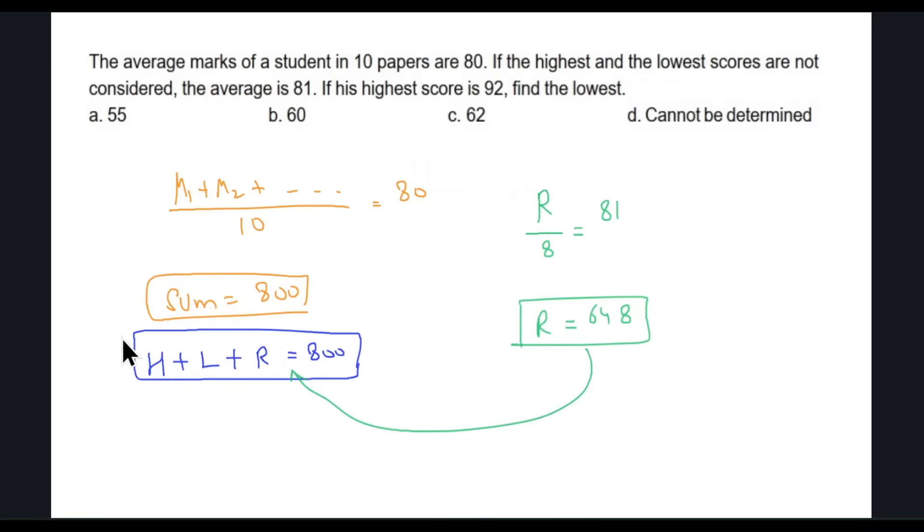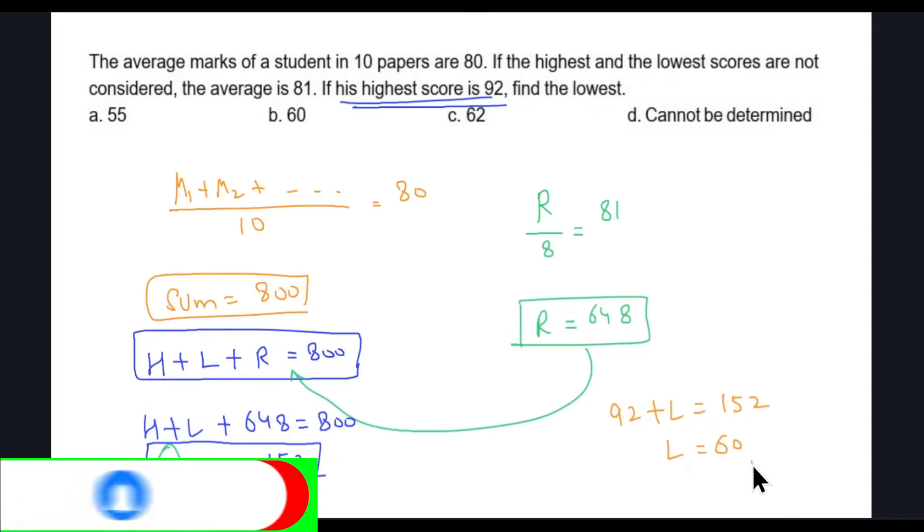I'm going to sub this in, so I get H plus L plus 648 equals 800. Subtracting 648 from both sides, I get 152. We are already given that the highest score is 92, so let's replace H with 92. So I have 92 plus L equals 152. So L is 60, which is 152 minus 92. The answer is option B.